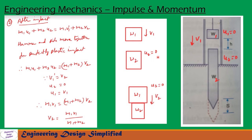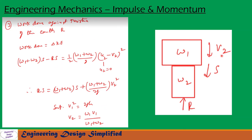Just before impact, the velocity of the hammer is v1 and the velocity of the pile is u2 = 0, since it is stationary. After impact, both hammer and pile move together with a velocity v2. Applying the momentum equation: m1·u1 + m2·u2 = m1·v1' + m2·v2. Since u2 = 0 and both move together after impact, v1' = v2. This equation becomes m1·v1 = (m1 + m2)·v2. Therefore, the combined velocity after impact is v2 = (m1·v1) / (m1 + m2).